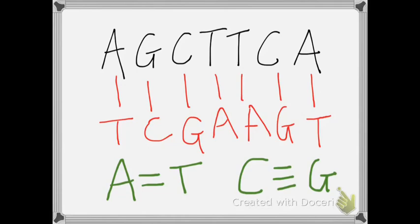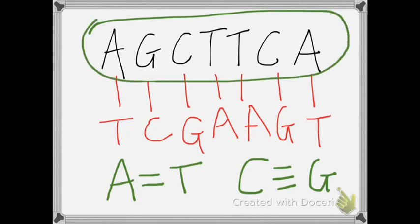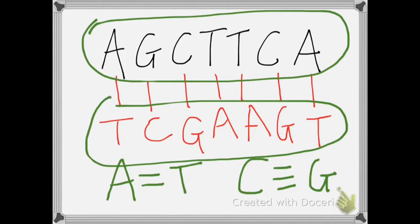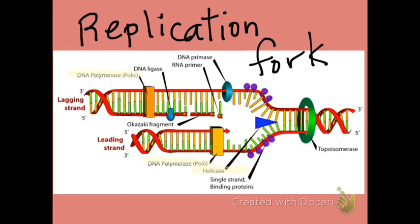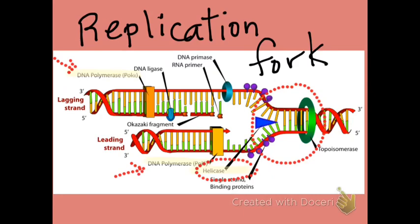To review the base pairing rules, remember: apples grow on trees and cars need gas — A pairs with T, and C pairs with G. Here you see the original strand of DNA, and the complementary strand across from it, matching using base pairing rules. Here are pictures of DNA replication forks, as well as a chromosome and a strand of DNA. This diagram shows the DNA replication fork: DNA helicase splits the hydrogen bonds between the two sides of the double helix, then DNA polymerase adds bases to the opened-up strands, making two new DNA molecules.